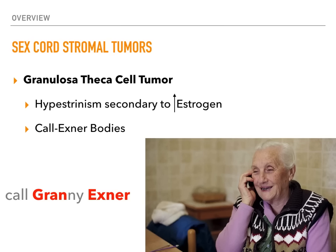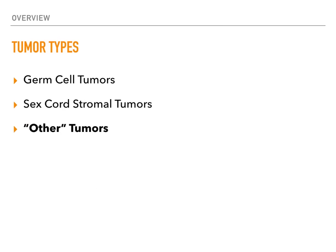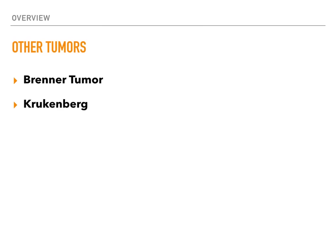That covers the sex cord stromal tumors. At this point, we've touched on every super high-yield tumor and their associated high-yield findings. If you're comfortable up until this point, you'll do really well on this section of boards. But to be a little more complete, I'll quickly run through two more tumors in the 'other' category: the Brenner tumor and the Krukenberg tumor.